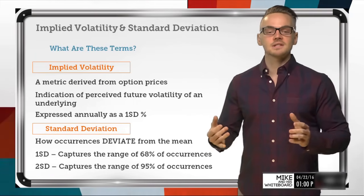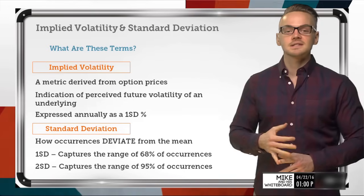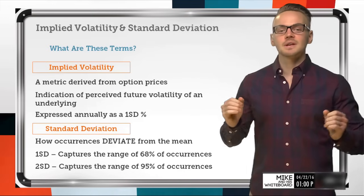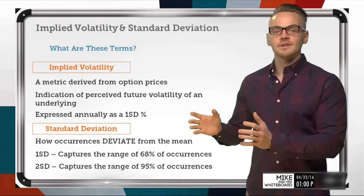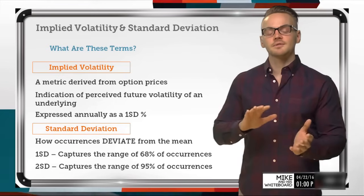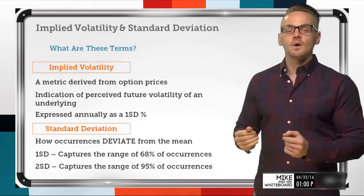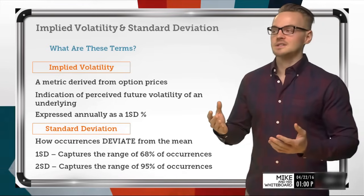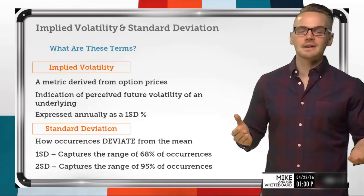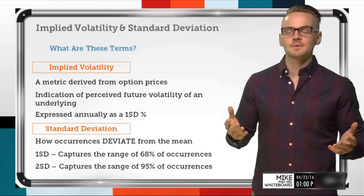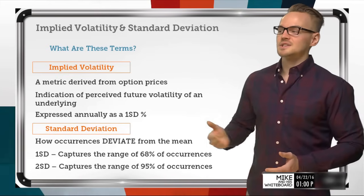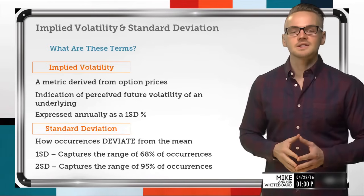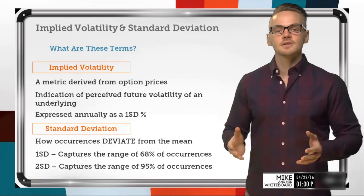Based on how that option's price is affected in the Black-Scholes model, we can solve for implied volatility or get very close to implied volatility, or what is perceived as that implied volatility. What is this implied value anyway? Well, it really is just an indication of perceived future volatility of an underlying.